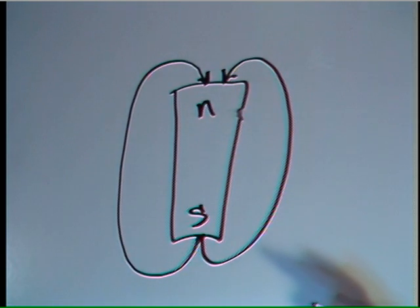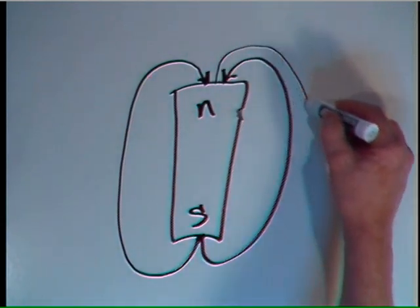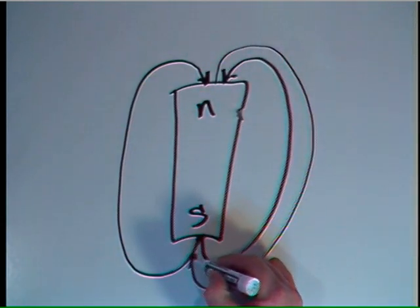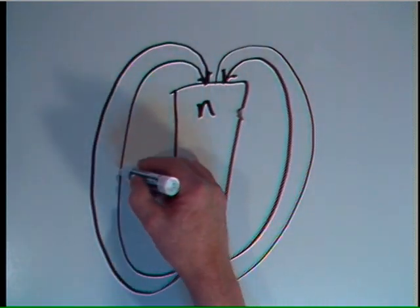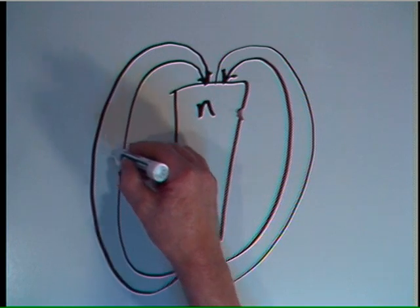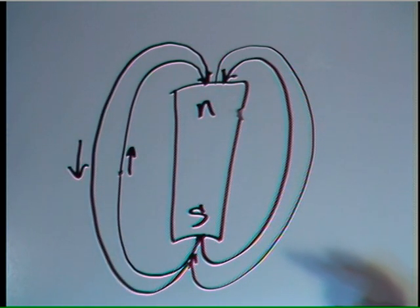And you also have to have a south monopole, its opposite, that would travel from the north and go into the south pole. So what you have are monopoles with an opposite charge moving opposite each other.